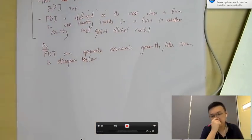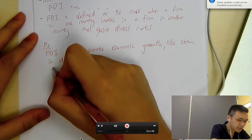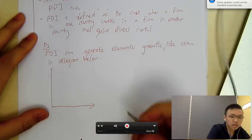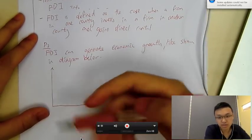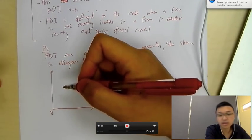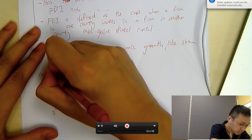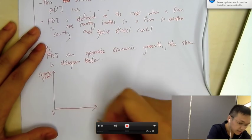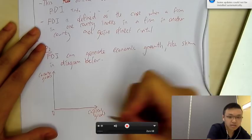Okay. So, what diagram can we do to show that FDI generates economic growth? I recommend you to draw the PPC. And the PPC, it's very important for you to label the axis correctly. Some students, they just put good A and good B. That is not, that is not good enough. So, you should have consumer goods and capital goods. This is the best way.